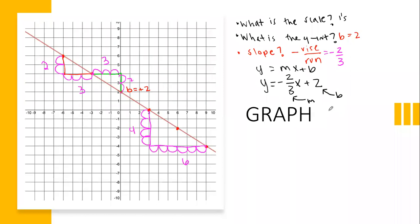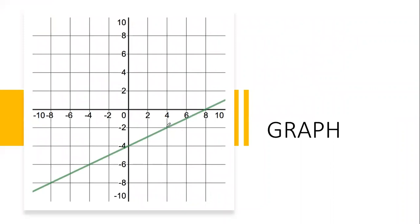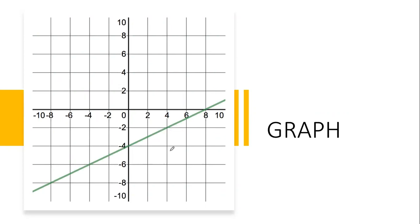When I ask what the scale is, I'm asking: the X-axis is counting by ones, so when I do my bunny hops I go by ones. But on this one, it's going by twos, so when I do my little bunny hops I have to count two, four instead of one, two. I'll explain it more on the next graph.